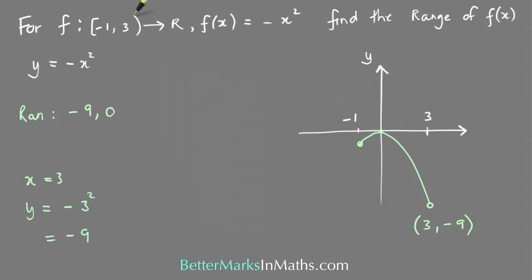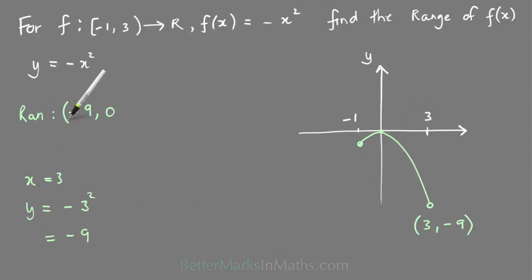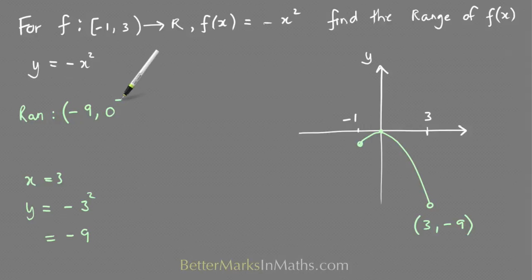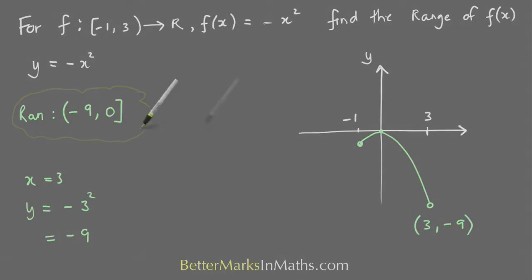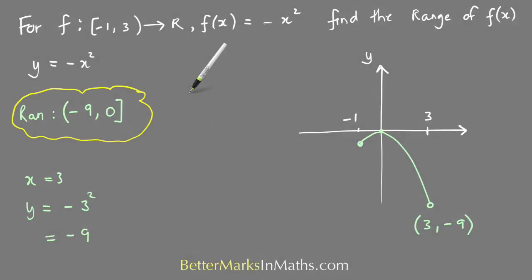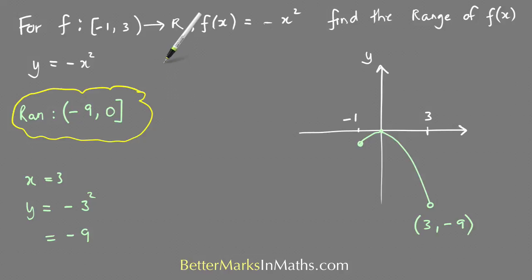The highest value is at the turning point, where y = 0. Since x = 3 is not included, that end gets a round bracket; the zero is included so that gets a square bracket. So the range is [−9, 0].